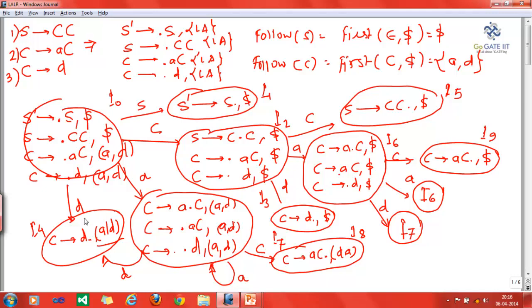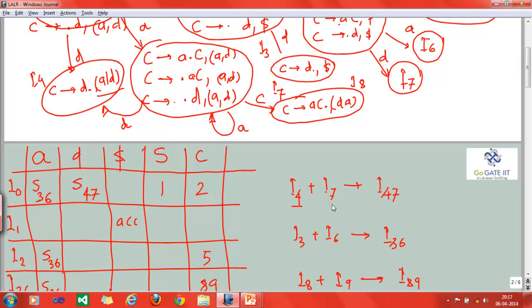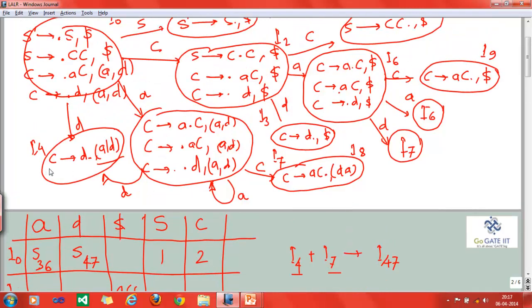That will produce, for example, I47. You can see here we have already written that I4 plus I7 combinedly gives you I47. I47 will have the same production, C tends to D dot, with three different look-ahead symbols: A, B, and dollar.